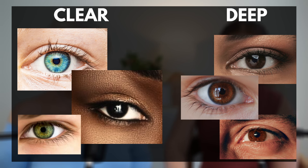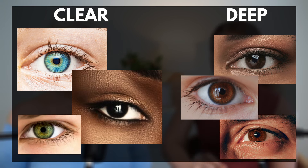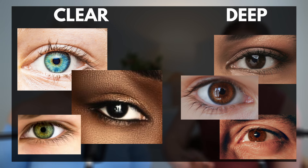What makes the difference? Do you see the drastic contrast between the eye color and the whites of the eye? That's what makes somebody clear with a deeper eye. But on the right-hand side, we have deep eyes — there's not a lot of contrast, not a lot of bright white showing. Do you see how those eyes don't have that high contrast?